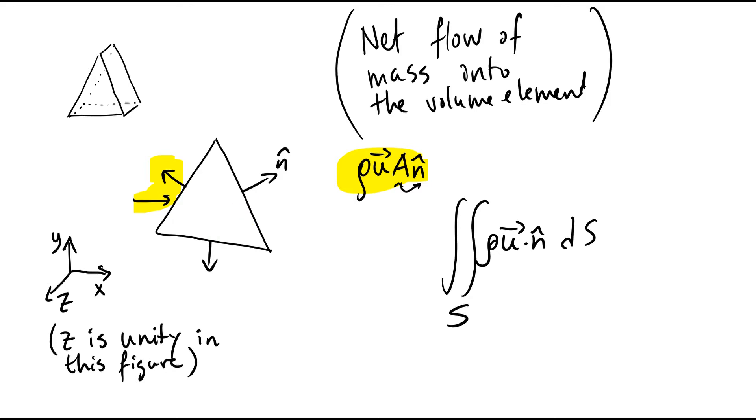Even though the triangle is a two-dimensional representation, remember that the finite volume is actually three-dimensional, even though the z-direction here is unity.